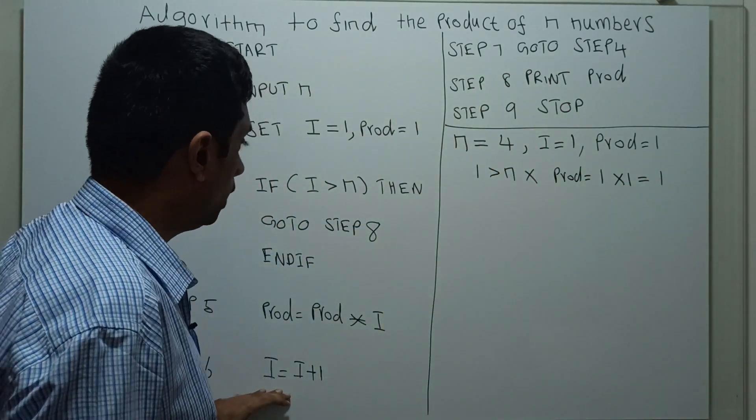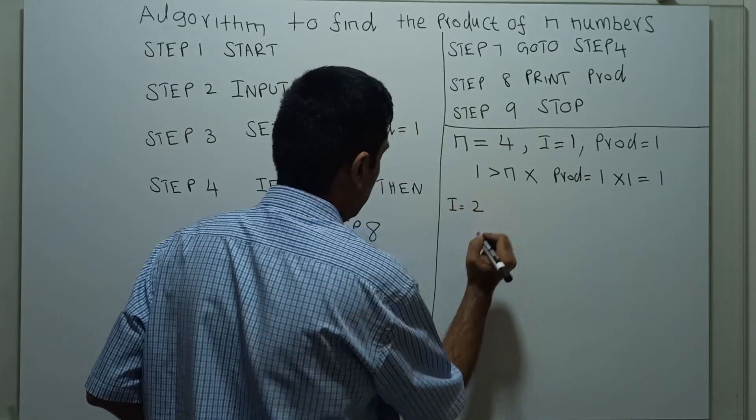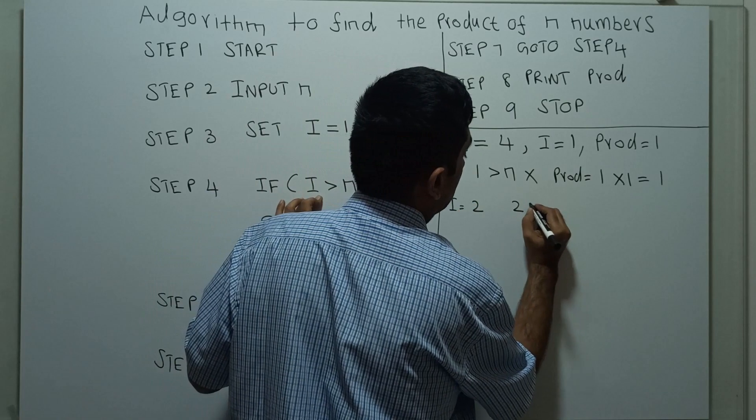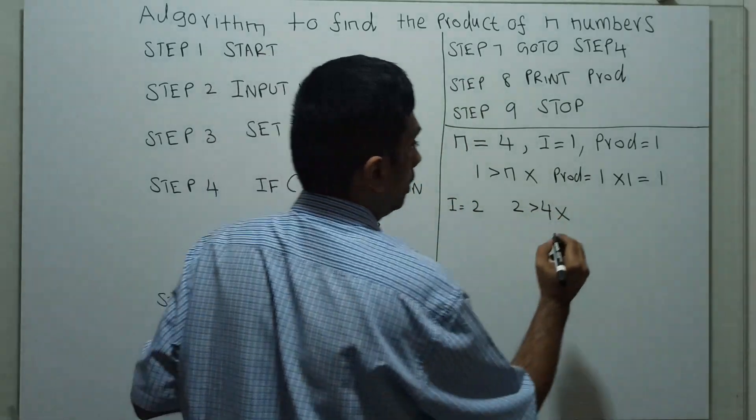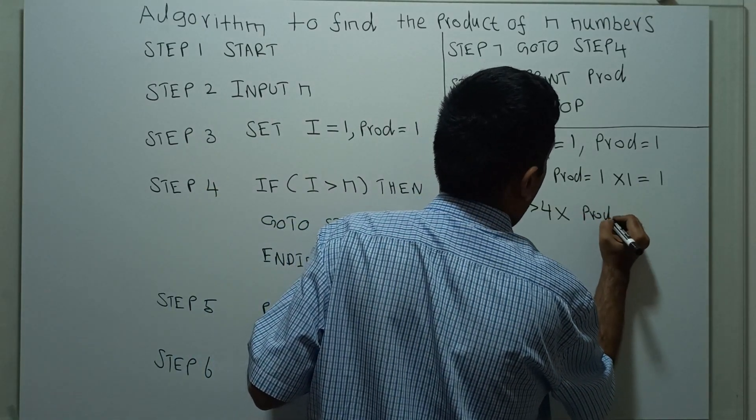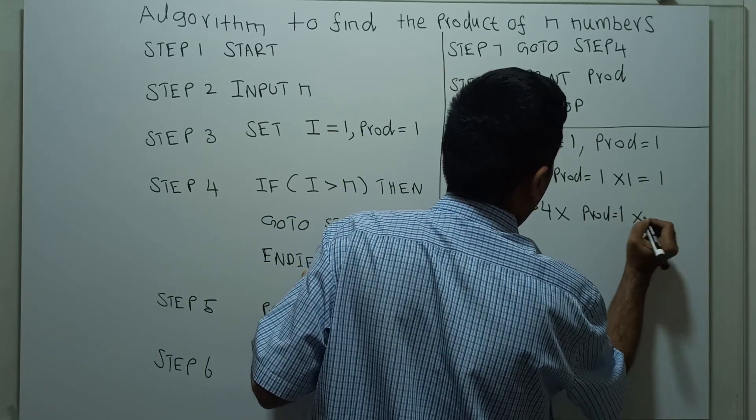Now incrementing i: i equals 2. Checking if 2 greater than 4, which is false. Product equals the existing value 1 times the new value of i,